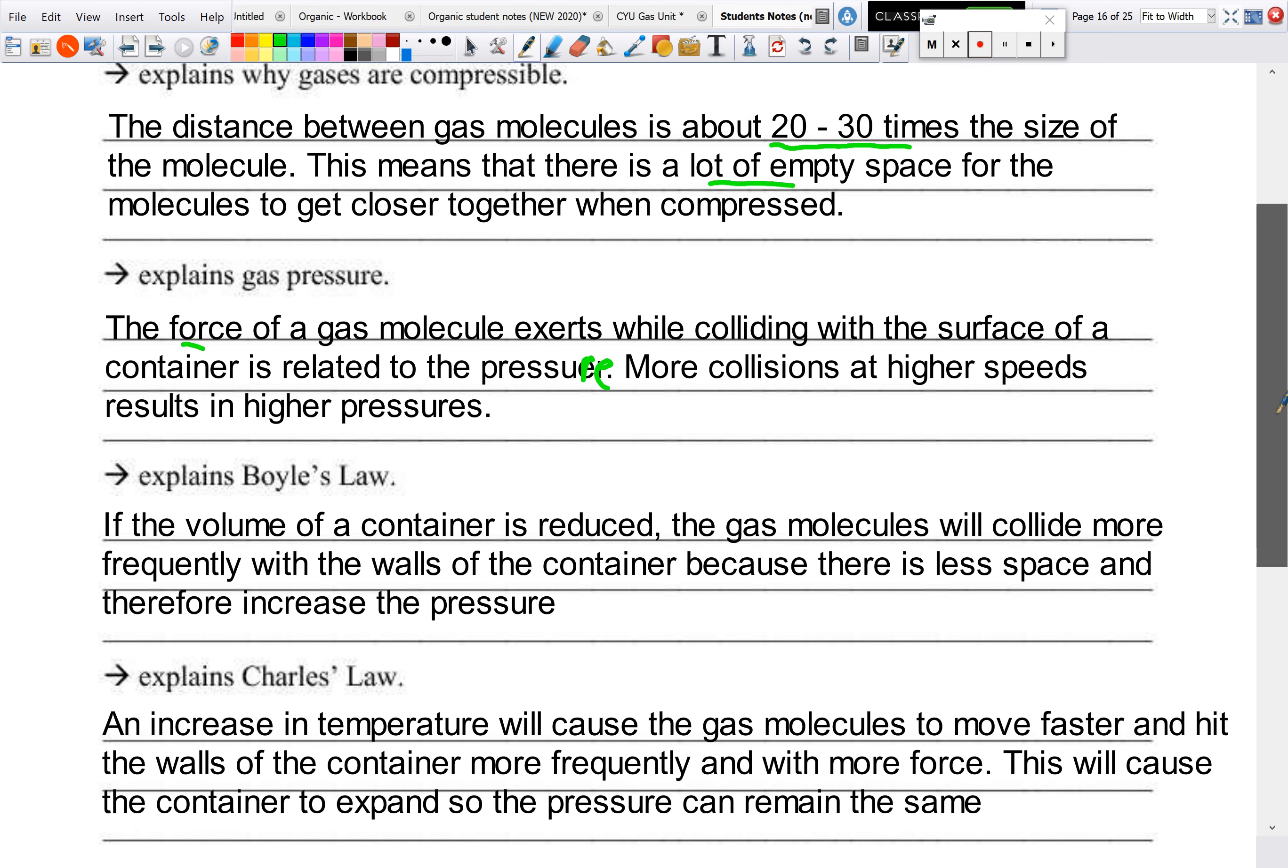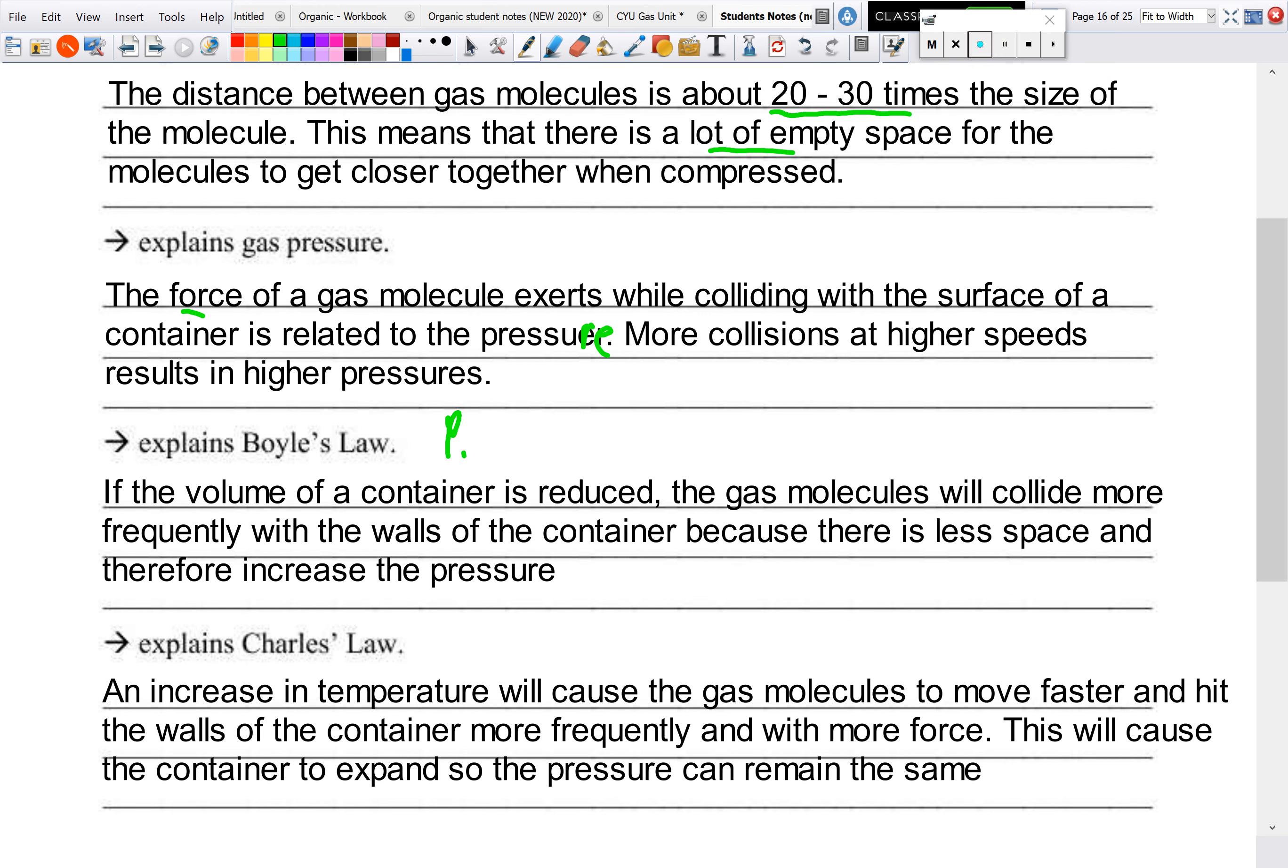So we have Boyle's law. So you know that Boyle's law is P1V1 equals P2V2. So when we are using kinetic molecular theory to describe Boyle's law, we have to relate pressure and volume. So how this works, if the volume container is reduced, the gas molecules will collide more frequently with the walls of the container because there is less space and therefore will have an increase in pressure. Then of course the opposite is the same. If we increase the volume of the container, the gas molecules will collide with the container less and that will decrease the pressure.